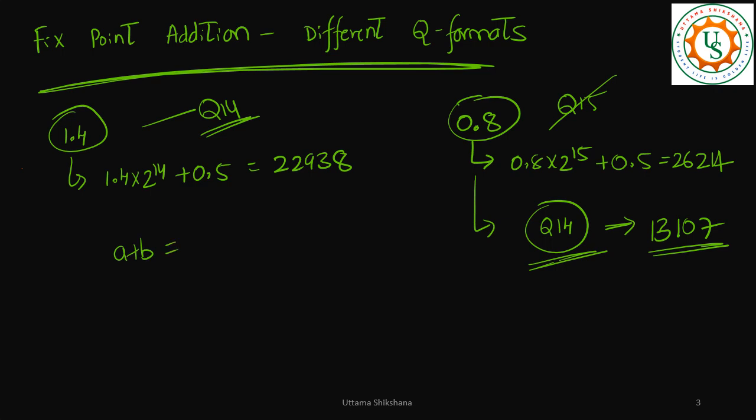Now A plus B is 22938 plus 13107, so I'm gonna get 36045. Definitely this is also not going to fit in 16 bits, right? But now this is Q14, this is Q14, so addition there will be bit growth. So you need to put the result in Q13 format.